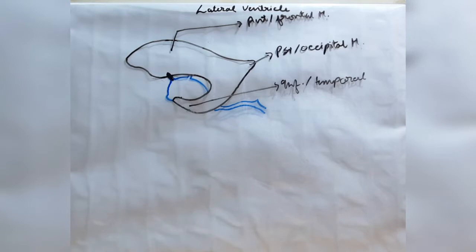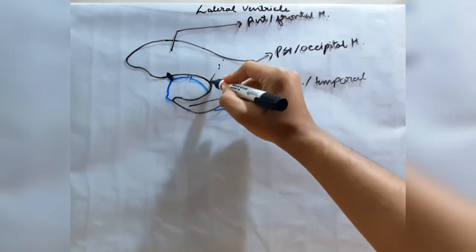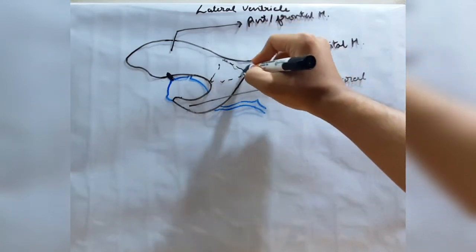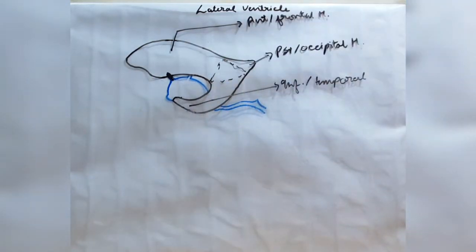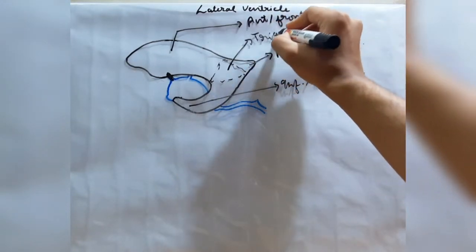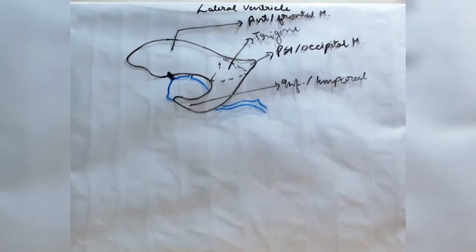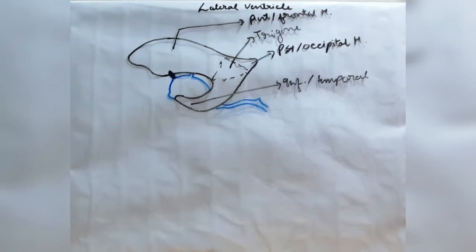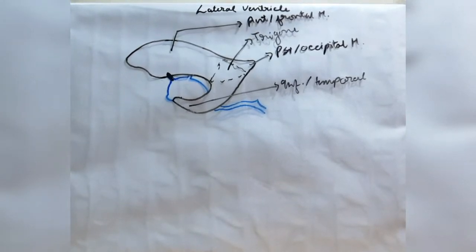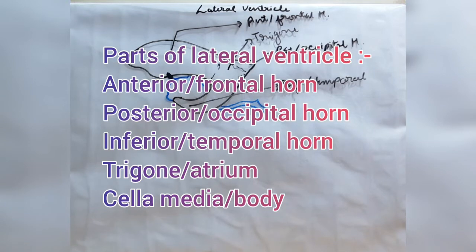Now let us talk about the trigone. The trigone, also called the atrium of the lateral ventricle, is the posterior confluence of the occipital and temporal horns. The last part of the lateral ventricle is the body or cella media, which is the central part of the lateral ventricle. So the lateral ventricle has five parts: anterior or frontal horn, posterior or occipital horn, inferior or temporal horn, trigone or atrium, and body or cella media.